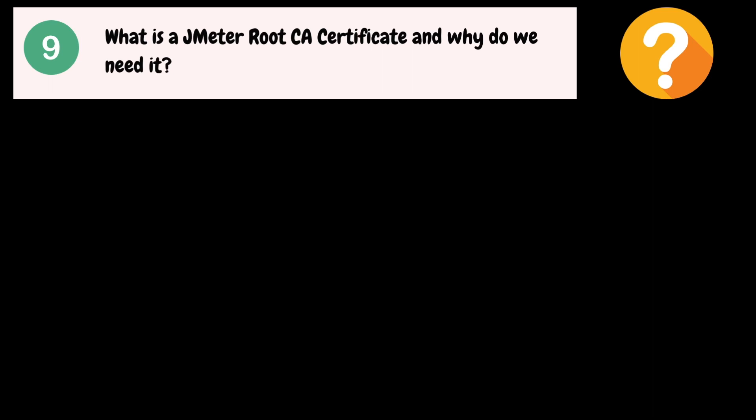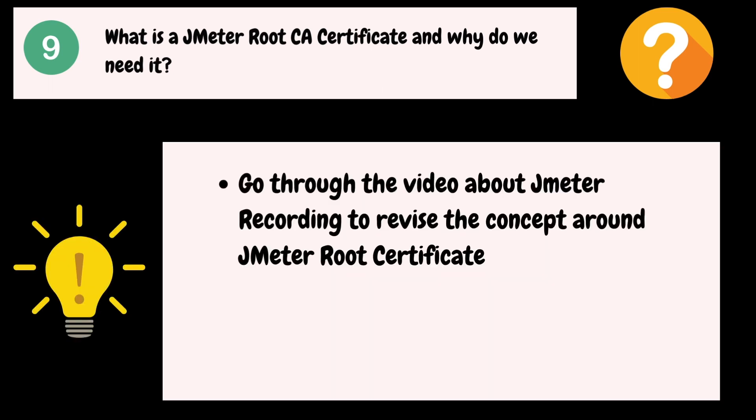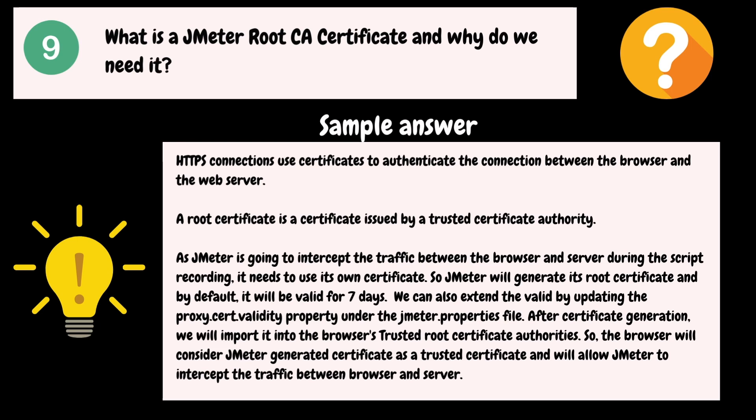What is JMeter Root CA Certificate and why do we need it? JMeter will generate the root CA certificate while recording the application traffic. Here is the sample answer: HTTPS connections use certificates to authenticate the connection between the browser and the web server. A root certificate is a certificate issued by a trusted certificate authority. As JMeter is going to intercept the traffic between the browser and the server during script recording, it needs to use its own certificate. JMeter will generate its root certificate, which by default is valid for seven days. We can extend the validity by updating the proxy cert validity property in the JMeter properties file. After certificate generation, we import it into the browser's trusted root certificate authority so that the browser considers the JMeter certificate as trusted and allows JMeter to intercept the traffic.